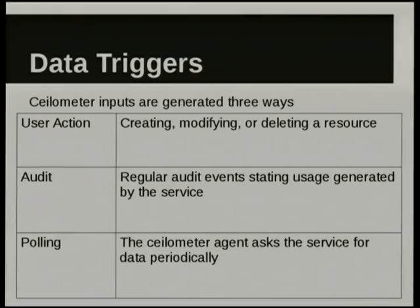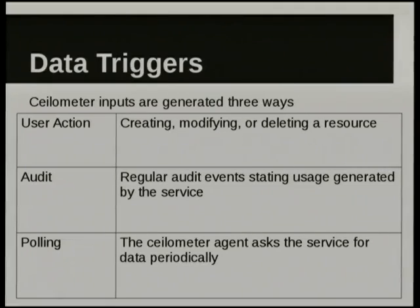How do you get information into Solometer? There's user action — if you're going to create a VM, and modify or delete it, NOVA will send out events, notifications on the AMQP bus, and we basically listen for those. There are auditing events as well that are generated. We also do polling, because not all the projects do notifications of all the resources, and there's other information like CPU that you want more frequently, so you poll for that.